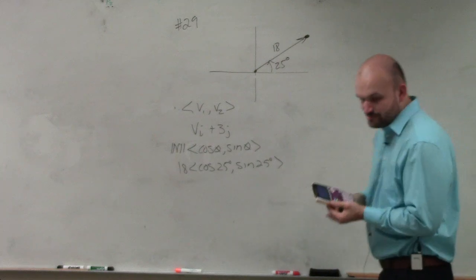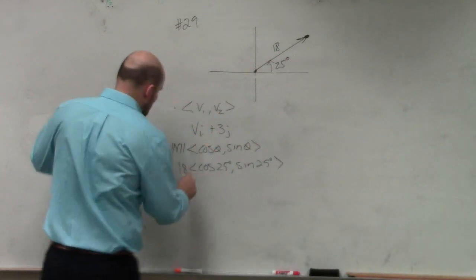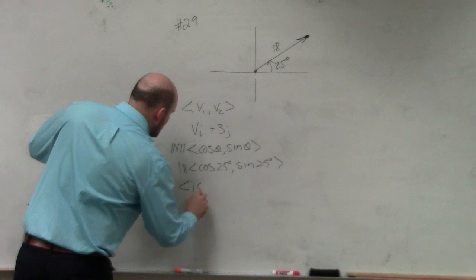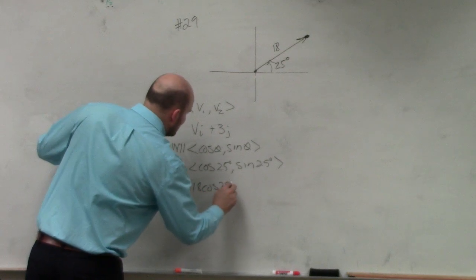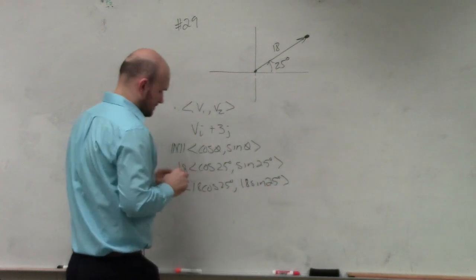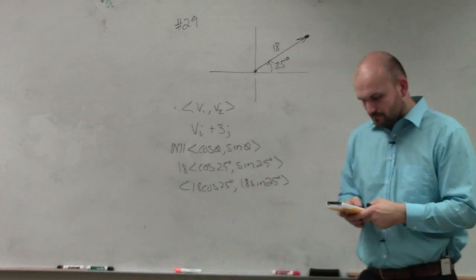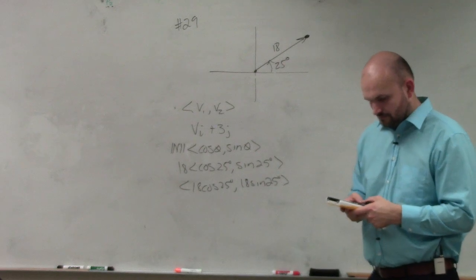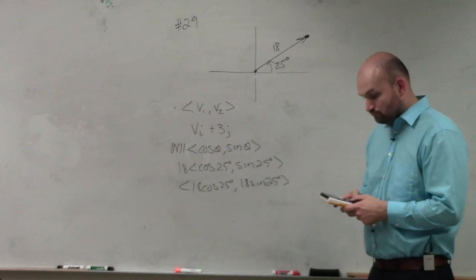So just remember, this is now a scalar. So it's really 18 times cosine of 25 degrees, comma, 18 times sine of 25 degrees. And that's the same kind of scalar for physics.